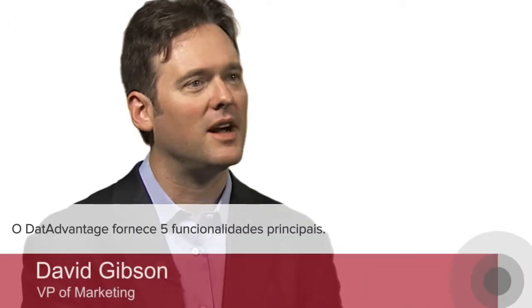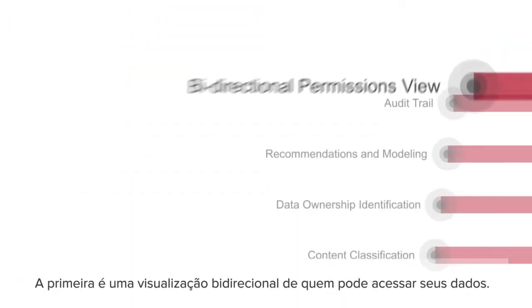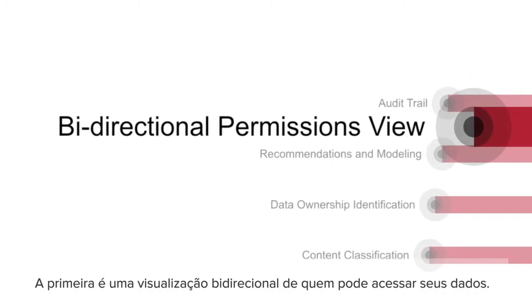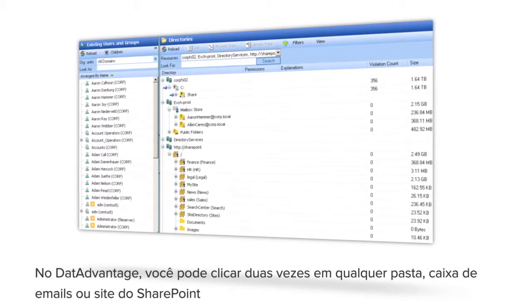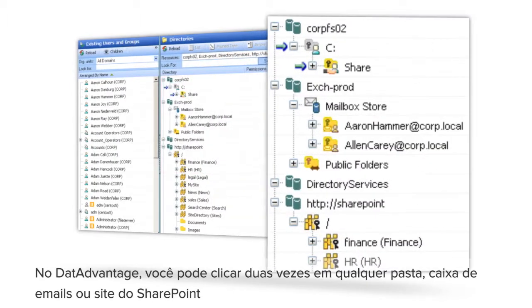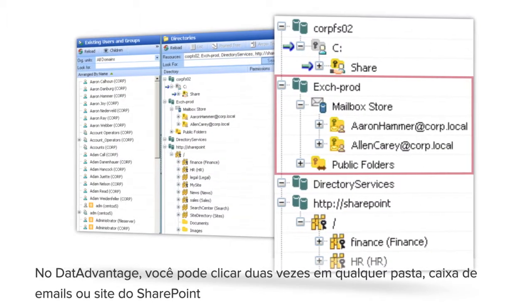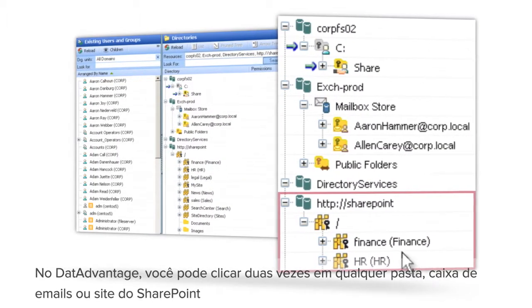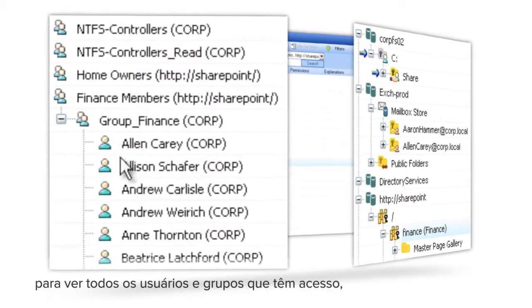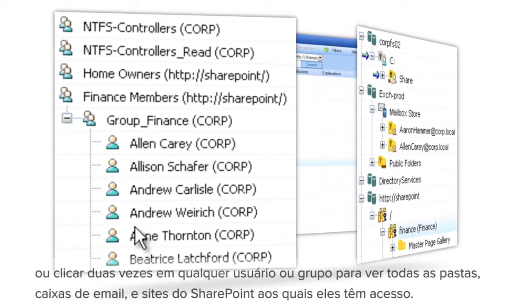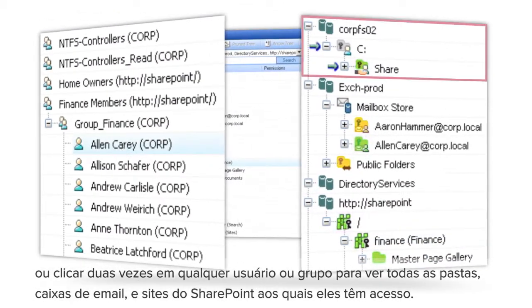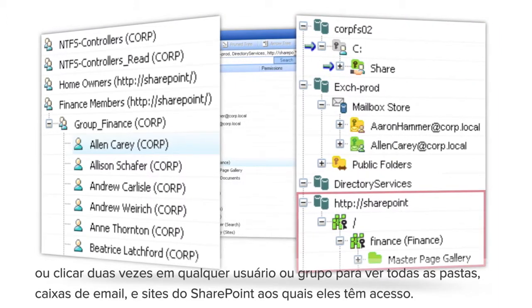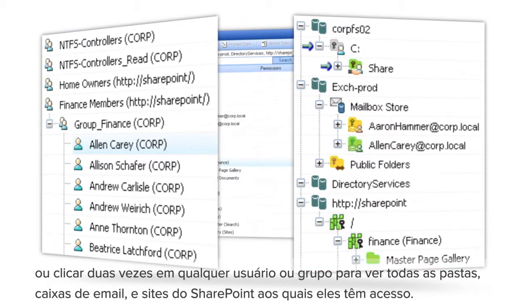Data Advantage provides five key pieces of functionality. The first is a bi-directional view into who can access data. In Data Advantage, you can double click on any folder, mailbox, or SharePoint site to see all the users and groups that have access, or double click on any user or group to see all the folders, mailboxes, and SharePoint sites they have access to.